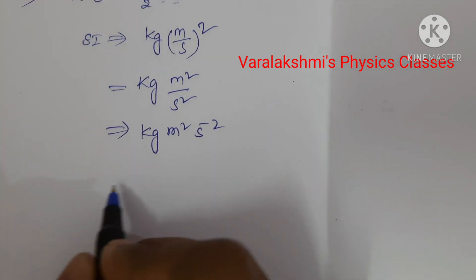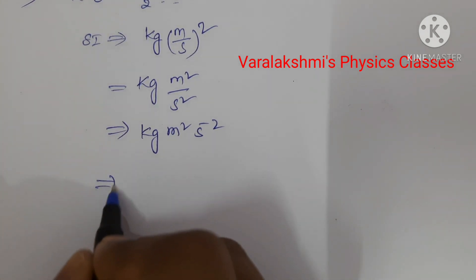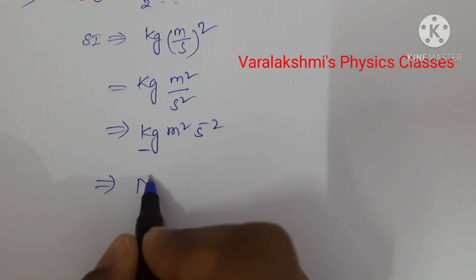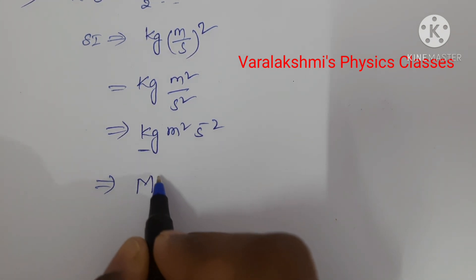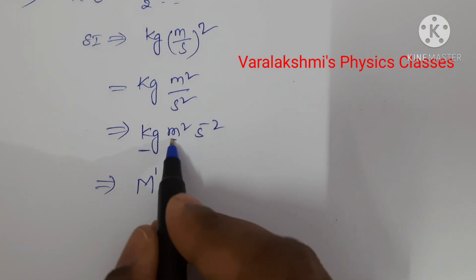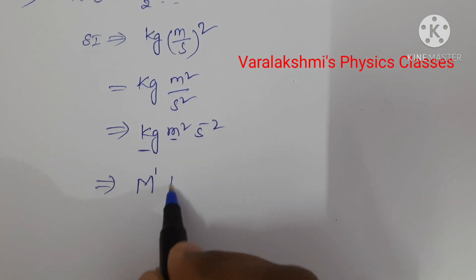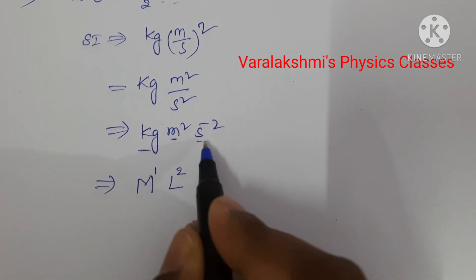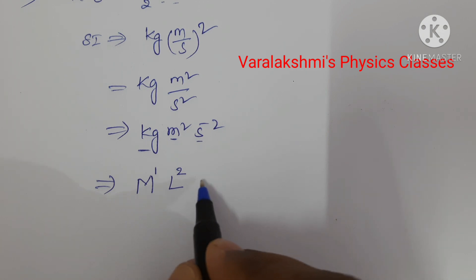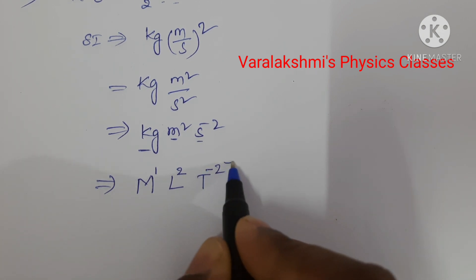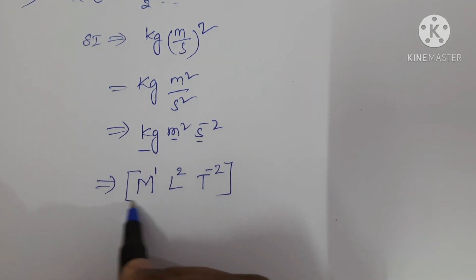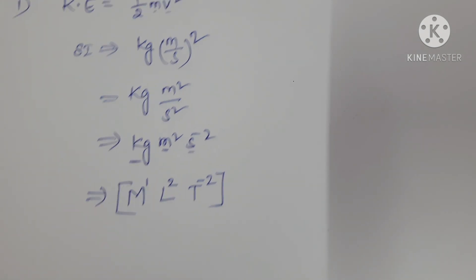Now let us write the dimensional formula. kg is the unit for mass, so M power 1. Meter is the unit for length, so L squared. Second is the unit for time, so T to the power of minus 2. This is the dimensional formula for kinetic energy.